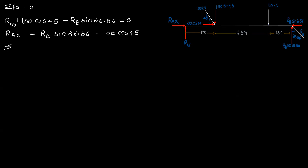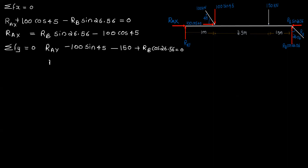Now, the sum of Fy equals zero. In the y-direction, the positive terms are RAy, minus 100 sin 45, minus 150, plus RB cos 26.56 equals zero. Therefore, RAy equals 100 sin 45 plus 150 minus RB cos 26.56.